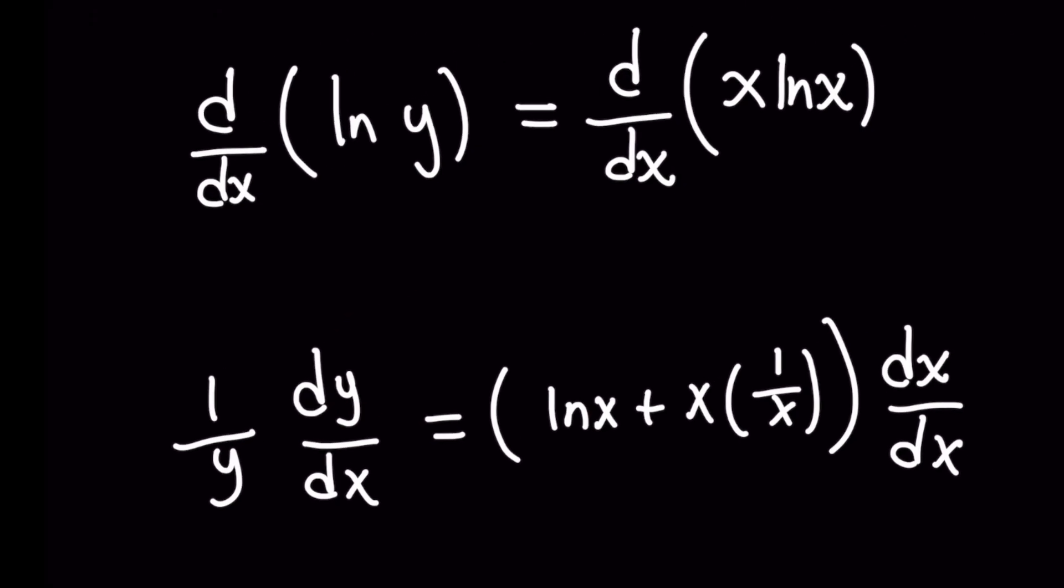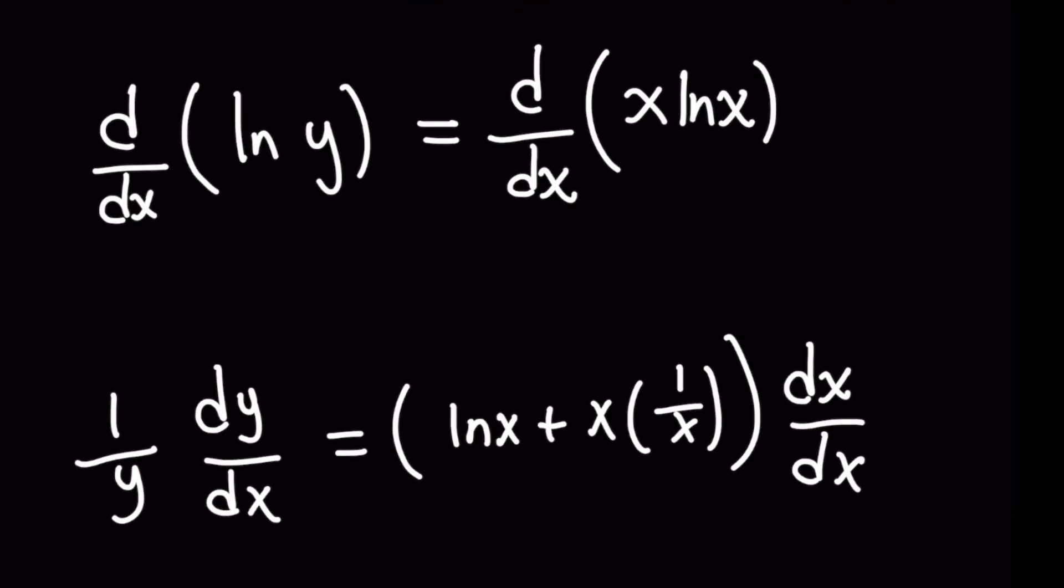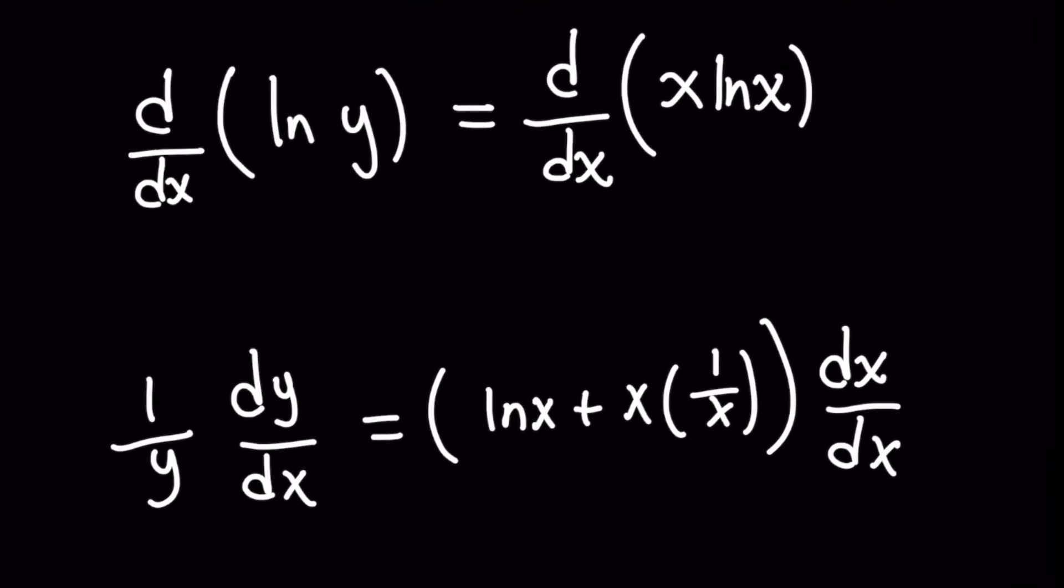Now on the right-hand side, I'm going to take the derivative of x ln x using the product rule, giving me ln x plus x times 1 over x. And if you remember, we basically take the derivative of the left term times the right, plus the derivative of the right term times the left. And then now for its differential, same idea, but now on the top, because we were dealing with an x as the control variable, I'm going to use dx.